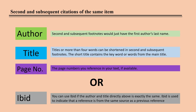In second and subsequent citations of the same item, you need only use the author's last name. Titles may be shortened according to the rules of shortened titles. Page numbers may change according to which pages you are referencing in your text, or you can use IBID if the author and title directly above is exactly the same.